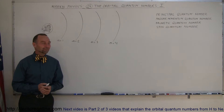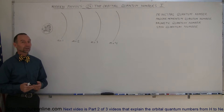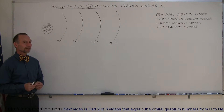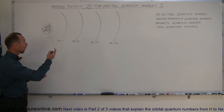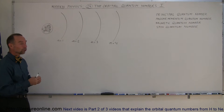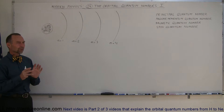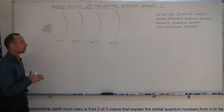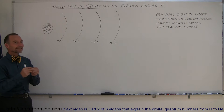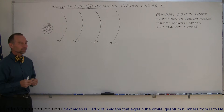Welcome to ElectronLine. Our next lecture is going to be about the orbital quantum numbers. Every electron will situate itself in a particular orbit around the nucleus of an atom according to certain principles of physics. In order to define that, we came up with four quantum numbers defining the state of an electron in a particular orbit around the nucleus.